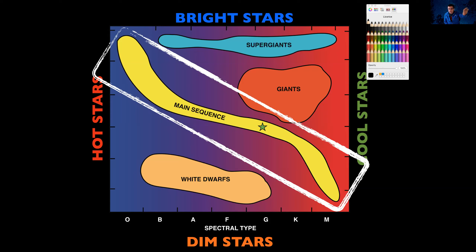Today I want to focus just on the main sequence — the middle life of a star. When stars are on the main sequence, they're burning hydrogen and turning it into helium via nuclear fusion. That is the main energy source of the stars. Along the main sequence, brightness changes as you go from top to bottom, and temperature changes from cool stars on the right to hot stars on the left.